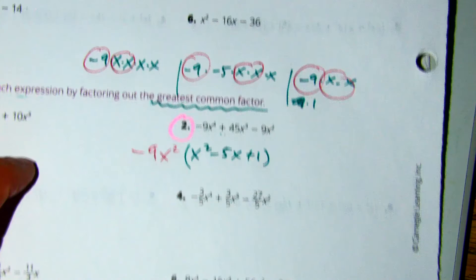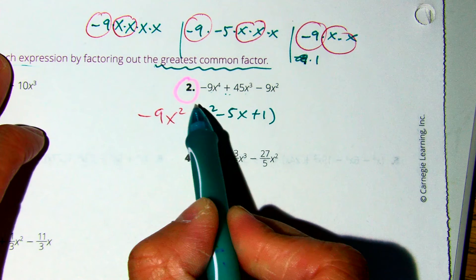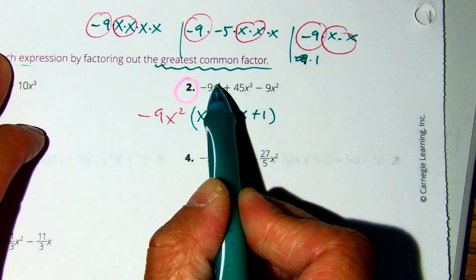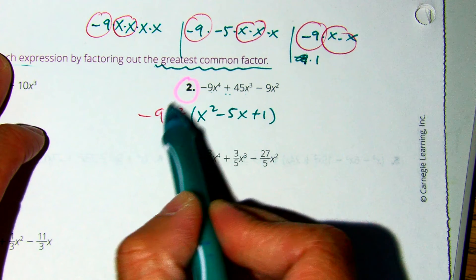Remember, if you're checking your answer and you're not sure if you're correct, you can always multiply. Negative 9x squared times x squared is negative 9x to the 4th. 45x cubed, and negative 9x squared.